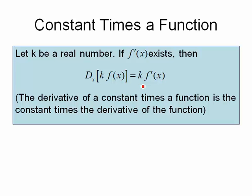So if there's a number attached to something you know how to take the derivative of, you take the derivative of that something and then multiply it through by that number.